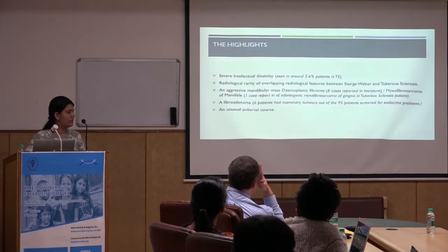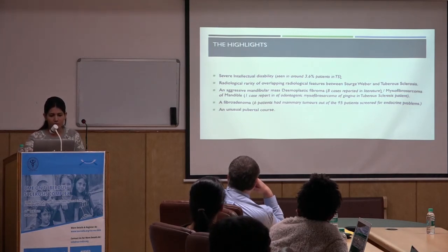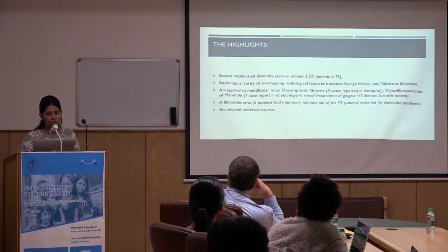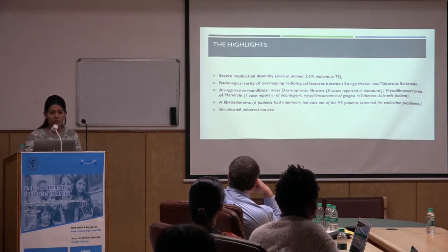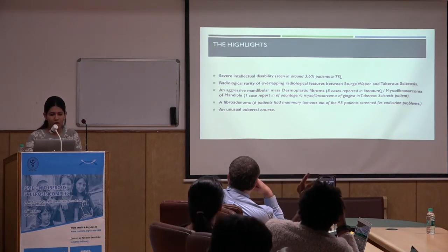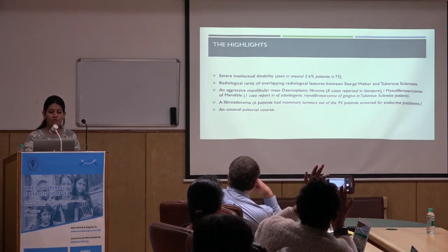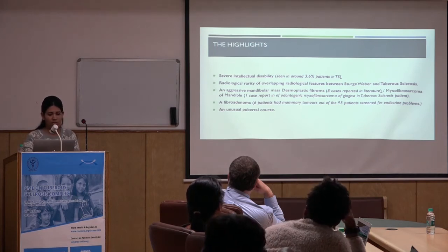Now the highlights of the case. The case was curious in the sense that the child had severe intellectual disability, which is seen in around 3.6% of TS patients. There was a radiological rarity of overlapping features between Sturge-Weber syndrome and tuberous sclerosis. The aggressive mandibular mass, desmoplastic fibroma — eight cases have been reported in literature — and myxofibrosarcoma of the mandible, where only one case report is available of myxofibrosarcoma of the gingiva in TS patients. There was also a fibroadenoma, with six patients having mammary tumours according to the Japanese study, and an unusual pubertal course.